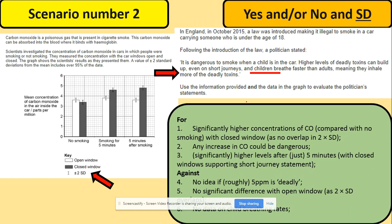If you're evaluating any statement, you could talk about arguments for and arguments against. Let's have a look at what could be for. We've got significantly higher concentration of carbon monoxide with closed windows, so closed windows are those dark ones. Any increase of carbon monoxide could be dangerous. Yes, that's correct from the information. Significantly higher levels after five minutes. Yes, we can see that.